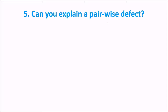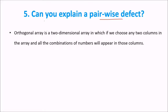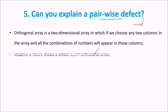What is a pairwise defect? An orthogonal array is a two-dimensional array in which we choose any two columns in the array and all combinations of numbers will appear in those columns.